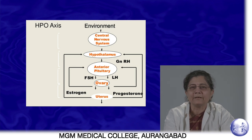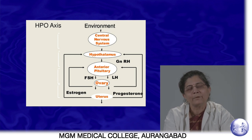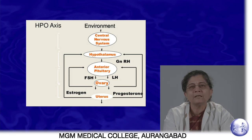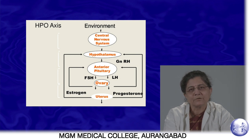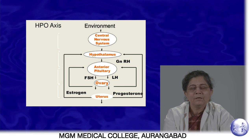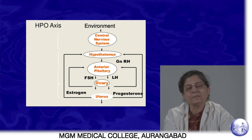The anterior pituitary first secretes follicle stimulating hormone, which stimulates the ovary so that one of the dormant follicles starts growing. The cells around the follicle secrete estrogen, causing negative feedback for FSH. As estrogen levels rise, there is an LH or luteinizing hormone surge, leading to ovulation — the release of the follicle from the ovary. After ovulation, the remaining part is called the corpus luteum, which secretes both estrogen and progesterone.